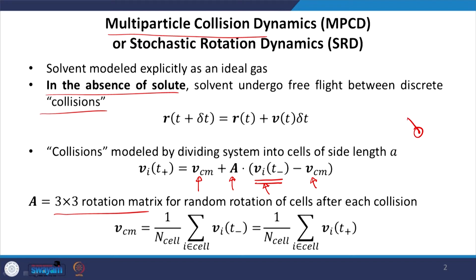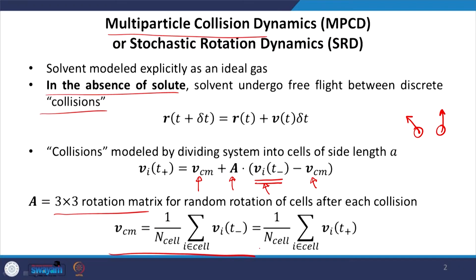If a molecule was going in one direction it will now go in a different direction. The velocity of the molecules undergoes a change, but the center of mass velocity computed over all the particles in a cell is not changed — it is the arithmetic average of velocities of all solvent particles in that cell before and after the collision.